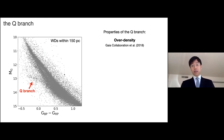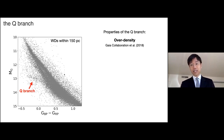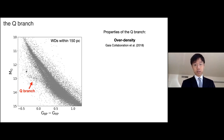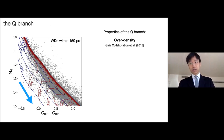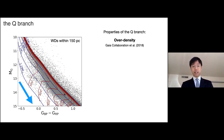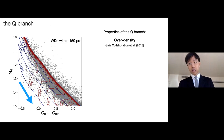The first thing we noticed about this branch is that it is an overdensity. About two times — the number density is about two times higher than above and below the branch. We also realized that it's not parallel to any cooling track or isochrone. So that means it cannot be simply explained by a peak in star-forming history or a peak in mass distribution.